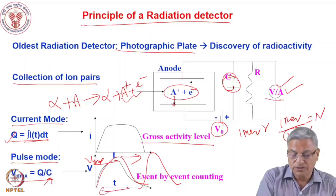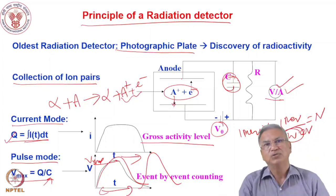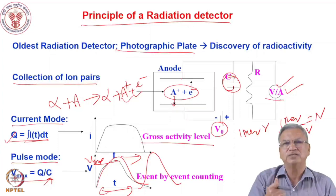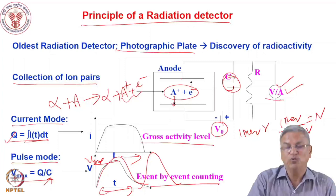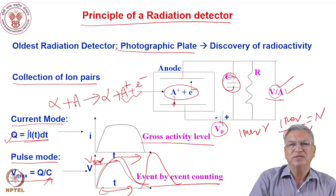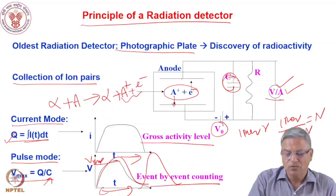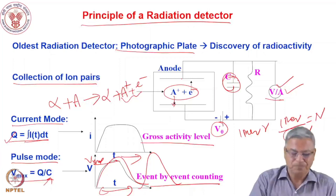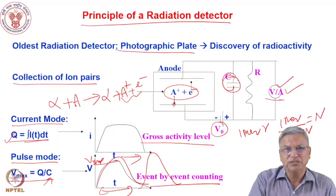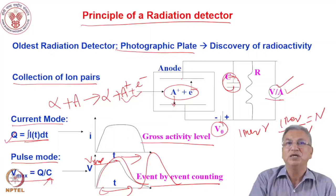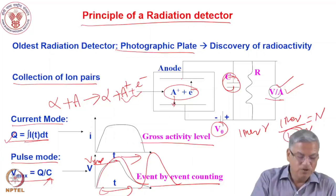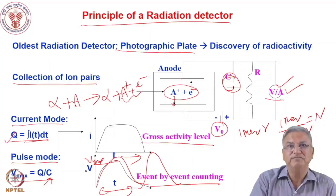We will discuss about the dead time. Different individual pulses are counted in the detectors in pulse mode, and that pulse mode is used for event-by-event counting — each decay can be counted separately. Detectors are operated in current mode and pulse mode. Some detectors are used in current mode, like survey meters, where you are interested only in gross activity level. Whenever you want to measure each event separately, you use pulse mode.